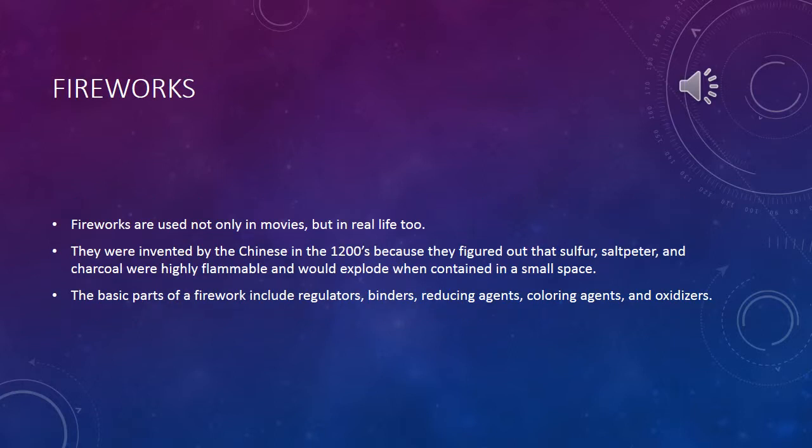Fireworks. Fireworks are not only used in movies, but in real life too. They were invented by the Chinese in the 1200s because they figured out that if you put sulfur, saltpeter, and charcoal in a small space and lit them on fire, they would explode. The basic parts of fireworks include regulators, binders, reducing agents, coloring agents, and oxidizers. Oxidizers produce the oxygen to burn the solution. The reducing agents burn all the oxygen. Binders keep all the materials together. And coloring agents produce the color in the fireworks.